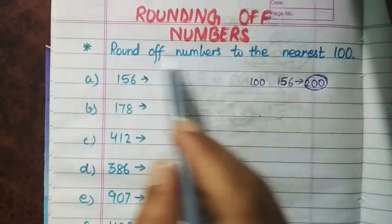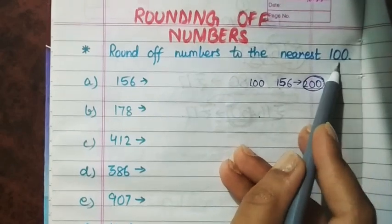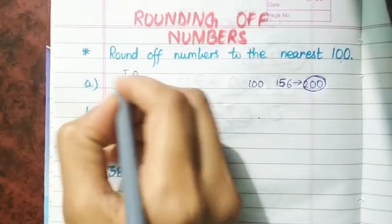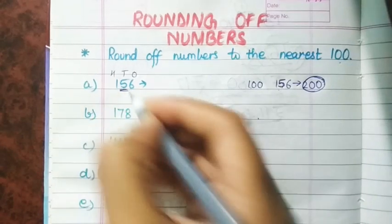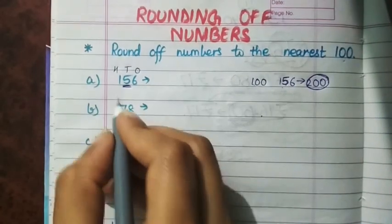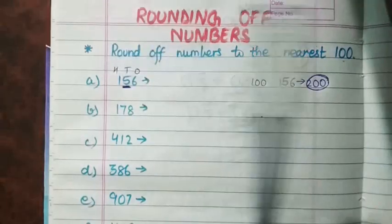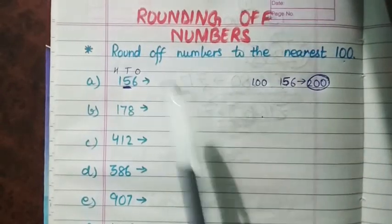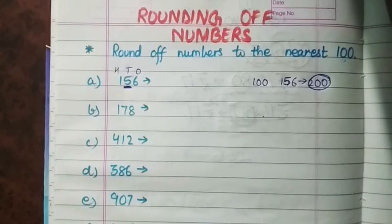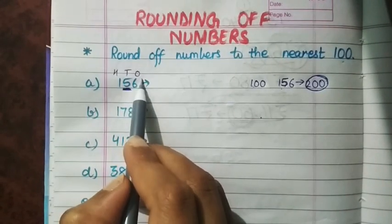Children, for rounding off numbers to the nearest 100, you have to look at the digit at the 10's place. As I told you in the previous video, to round off numbers to the nearest 10, you look at the 1's digit.